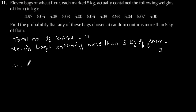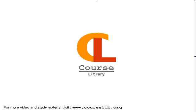So, the probability P that any of these bags chosen at random containing more than 5 kg of flour is 7 by 11, which is our answer: 7/11.